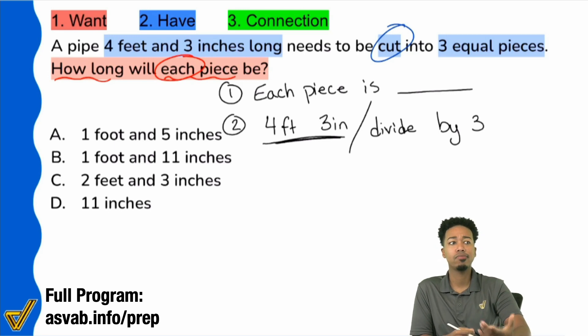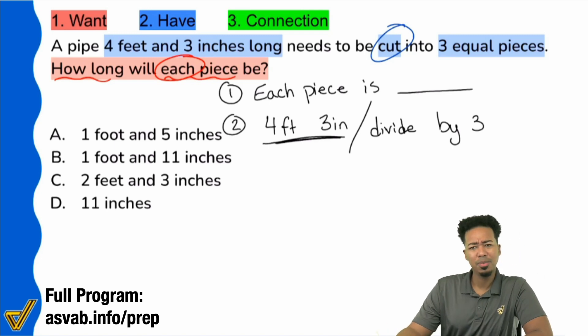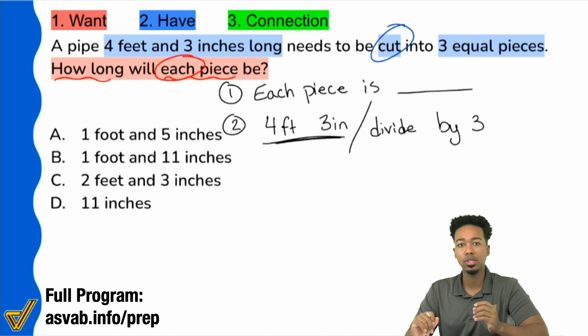So that's all we got to do now. The only question is how, right? Because when you look at four feet, three inches, you're not really used to dividing things like that. And so this is where your knowledge of unit conversions comes in. We're going to need to first convert this four feet, three inches into all inches. Divide it by the three and we'll see what we have. And if we need to convert that back into feet and inches, we will.